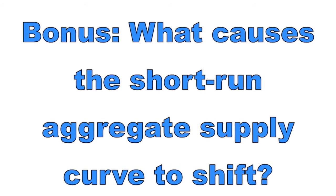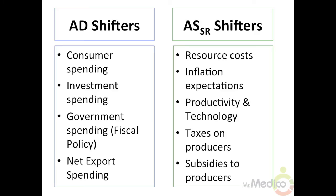Bonus: what causes the SRAS curve to shift? Anything that changes resource costs will shift the short-run aggregate supply curve. The most common determinants are changes in resource prices, inflation expectations, productivity, and tax incentives to suppliers. A negative supply shock — a sudden increase in a resource's price — causes a leftward shift of the SRAS curve, resulting in a higher price level and higher unemployment. This condition is known as stagflation.